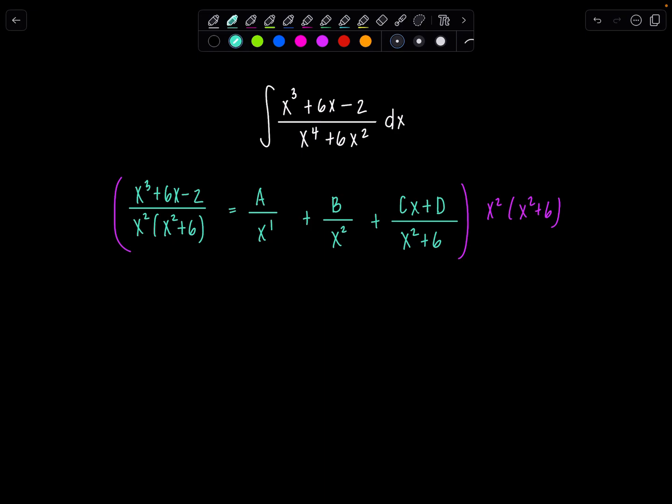So on the left-hand side, we're still going to have x cubed plus 6x minus 2 equals, I'll have A times just x now, x squared plus 6, plus B times x squared plus 6, plus cx plus d times x squared.